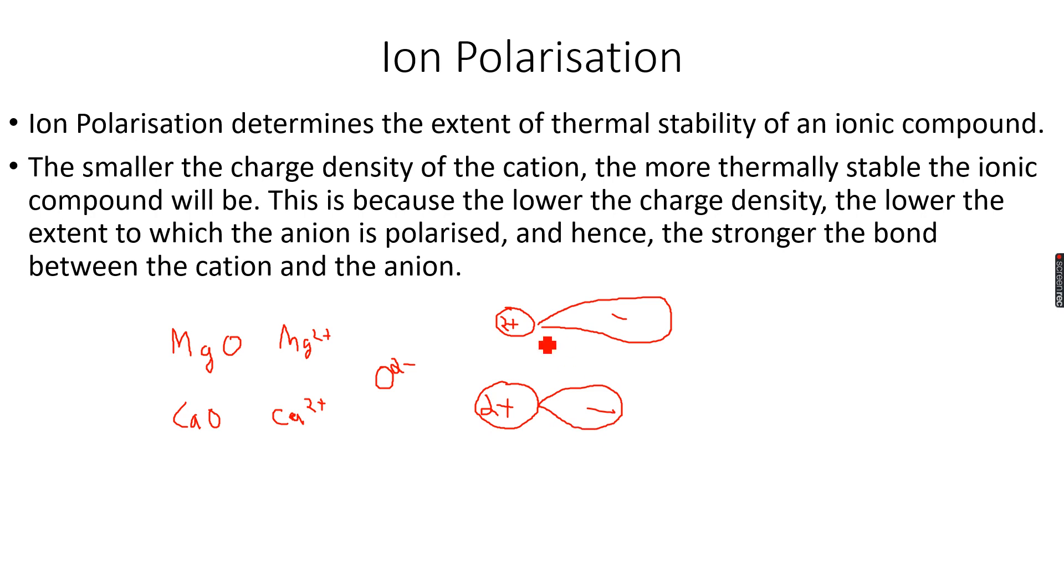Actually, the bond will be stronger in the case of CaO because it is polarizing the anion less than the Mg2+ ion. Since it is polarizing the anion less than Mg2+, CaO will be more thermally stable than MgO.